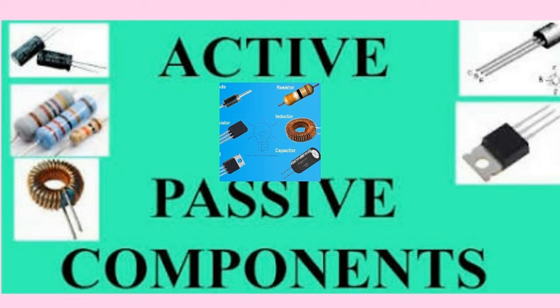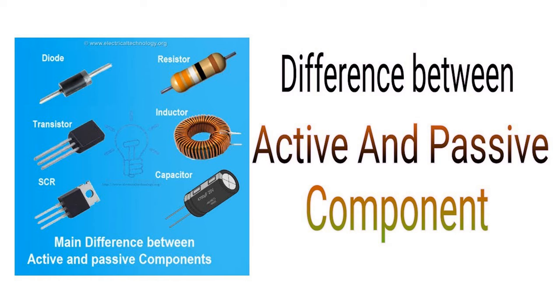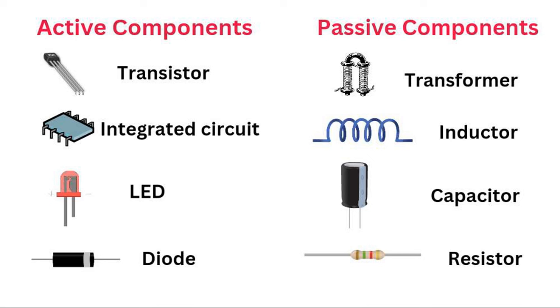A voltage amplifier increases the voltage level of the input signal. The gain of a voltage amplifier is expressed as the ratio of output voltage to input voltage: G = output voltage / input voltage. A current amplifier increases the current level of the input signal, with gain G = output current / input current. A power amplifier increases the power of the input signal; since power is the product of voltage and current, power amplification involves increasing both. The gain is expressed as G = output power / input power.